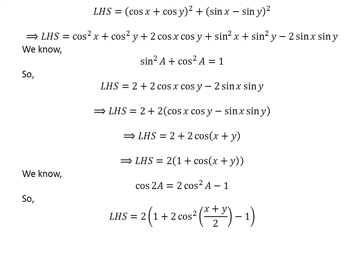Application of the above identity implies the left-hand side of the equation is equal to 2 times the quantity 1 plus 2 times square of cosine of x plus y upon 2, minus 1.